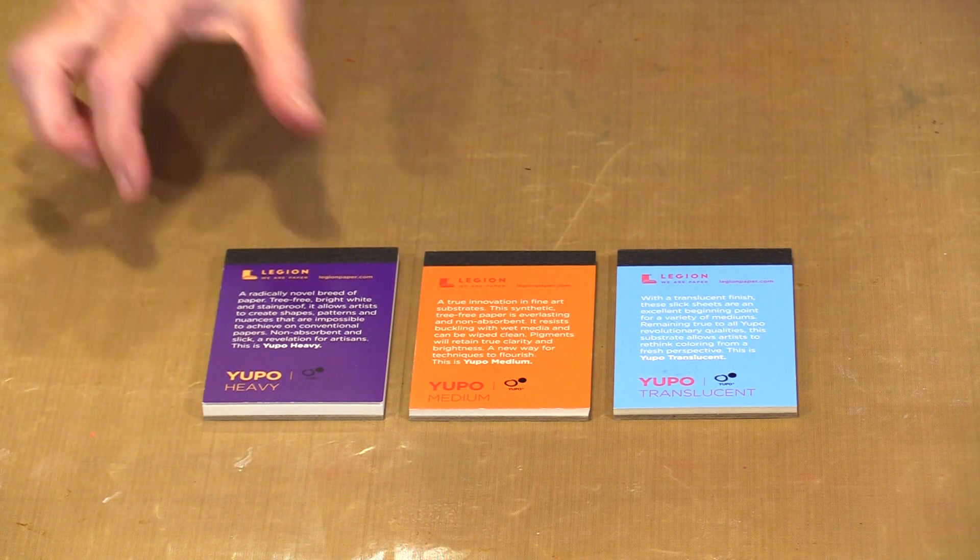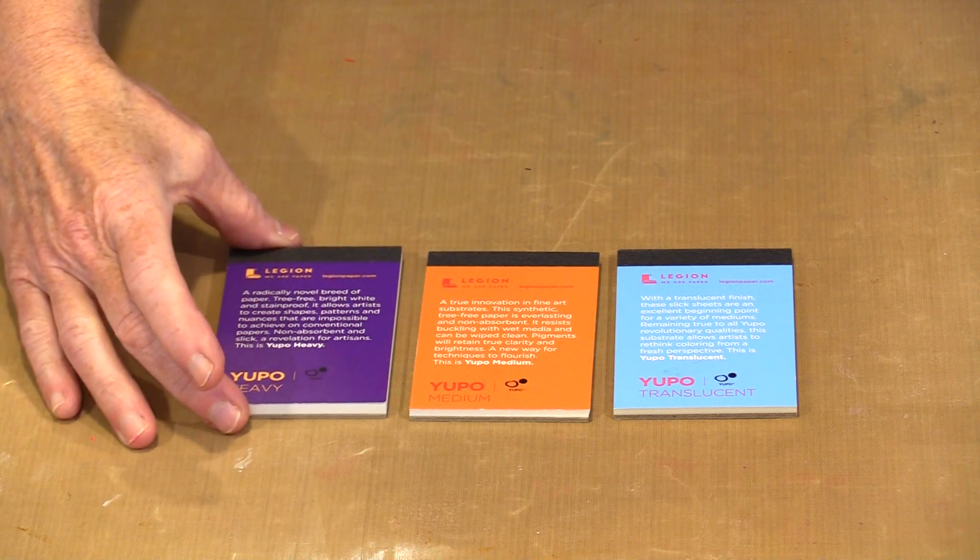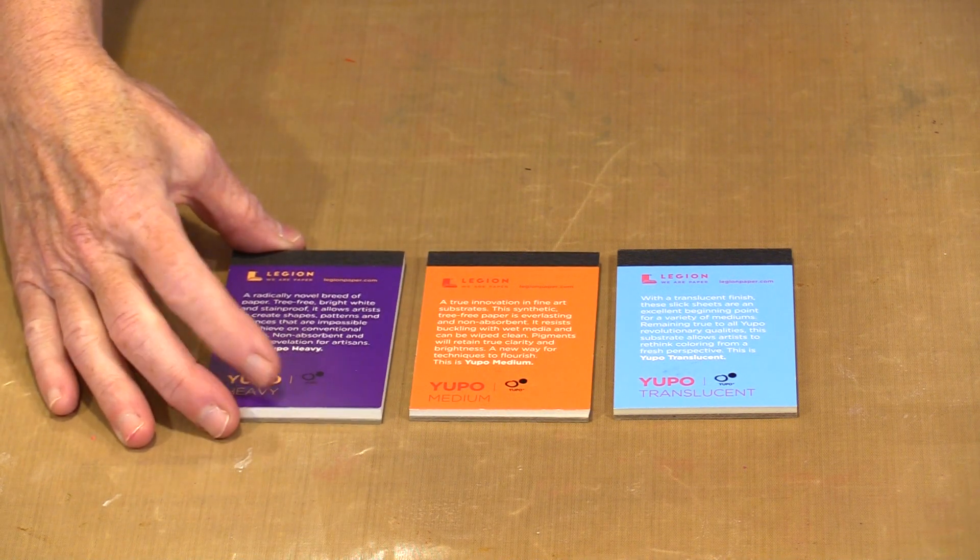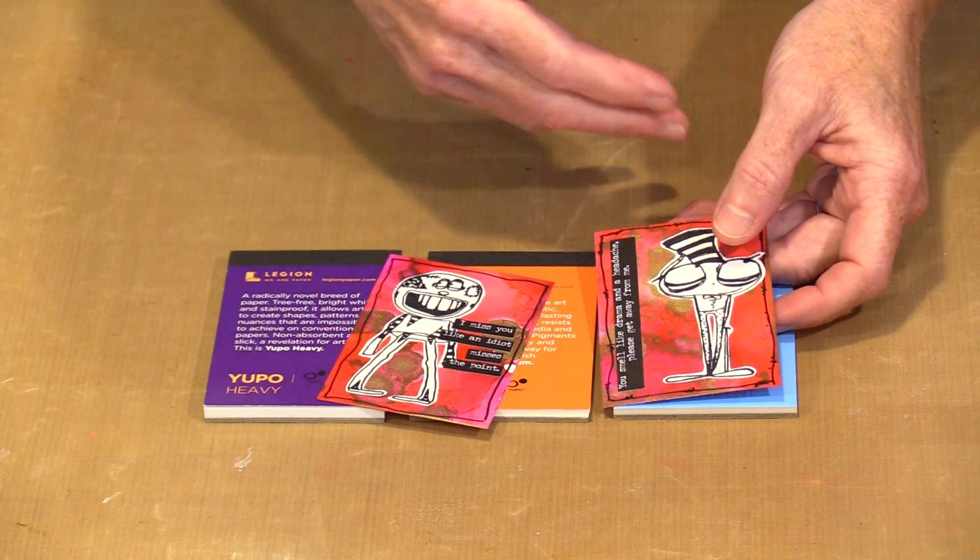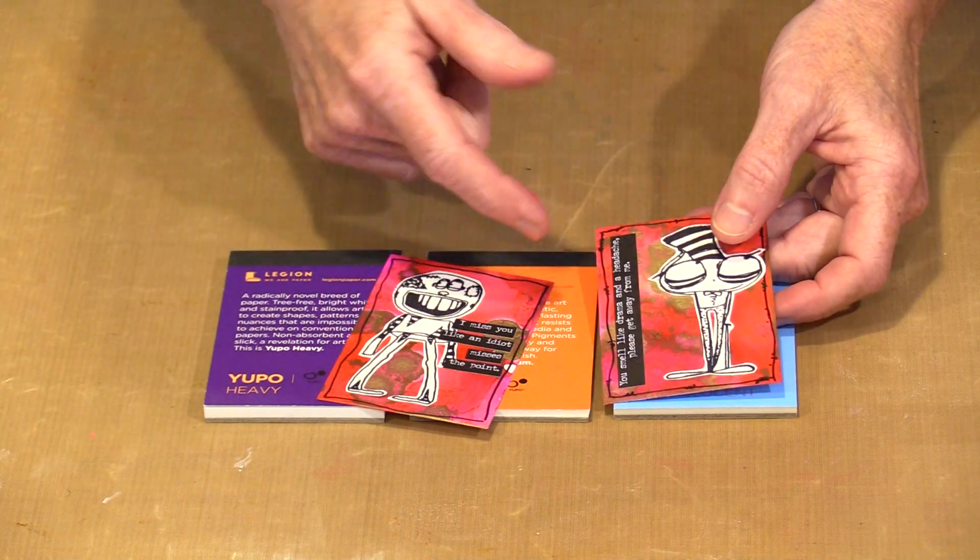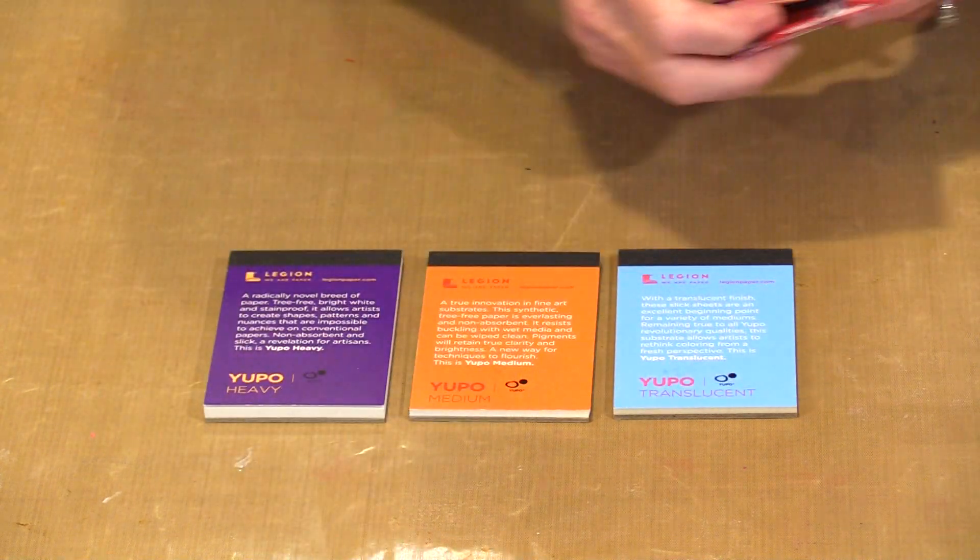The pads measure two and a half wide by three and three quarters long so they are that tick longer than ATC size. With that said once I get through with these all I did was cut them down before I started to embellish the surface so it's really quite easy to do.